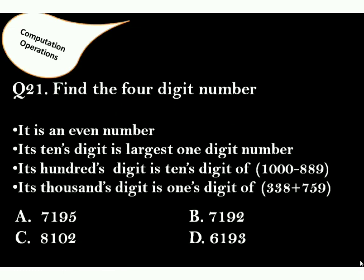Question 21: Find the 4 digit number. It is an even number. Its tens digit is largest one digit number. Its hundreds digit is tens digit of 1000 minus 889. Correct answer is option B. As it is an even number, options A and D are wrong. As per the second condition, option B has largest 1 digit number at tens place. There is no need of 3rd and 4th condition.